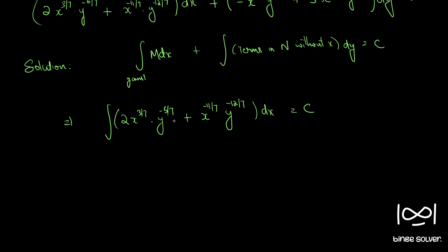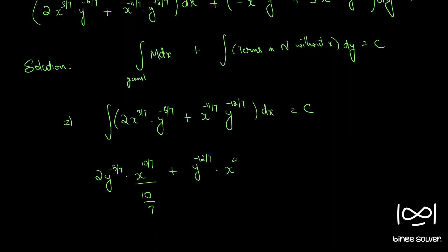Integrating M with respect to x: 2y^(−5/7) · x^(3/7+1)/(10/7) + y^(−12/7) · x^(−11/7+1)/(−4/7) = C. This simplifies to: (7/5)·x^(10/7)·y^(−5/7) − (7/4)·x^(−4/7)·y^(−12/7) = C.